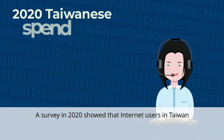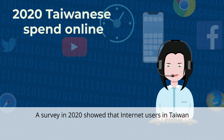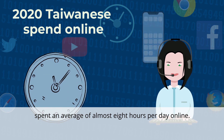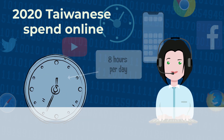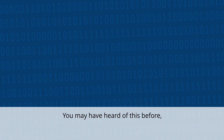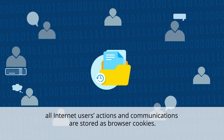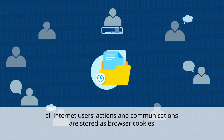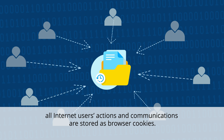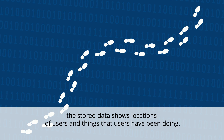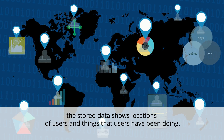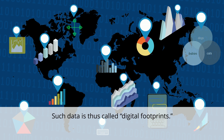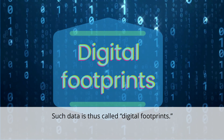A survey in 2020 showed that Internet users in Taiwan spent an average of almost 8 hours per day online. You may have heard of this before, but you may not know that all Internet users' actions and communications are stored as browser cookies. Like real footprints, the stored data shows locations of users and things that users have been doing. Such data is thus called digital footprints.